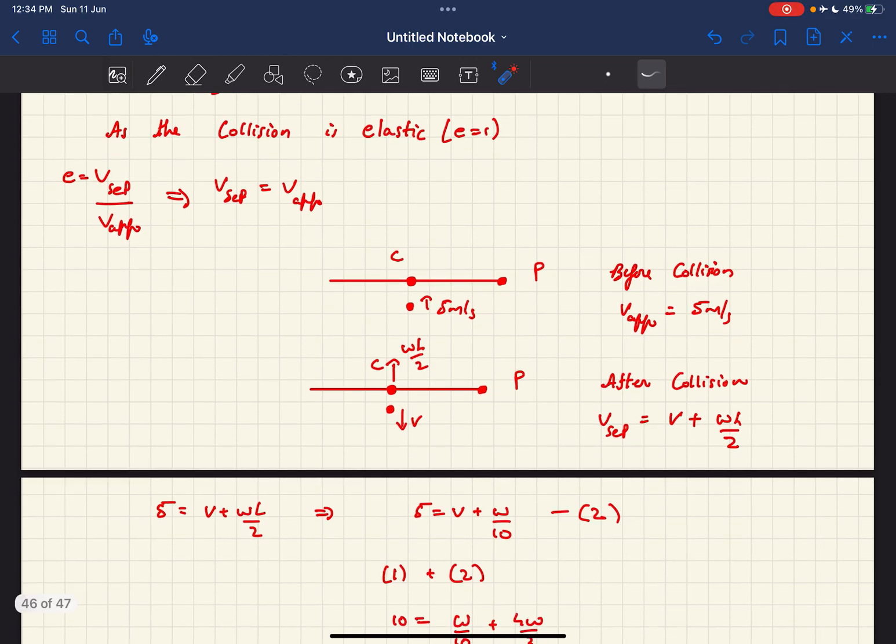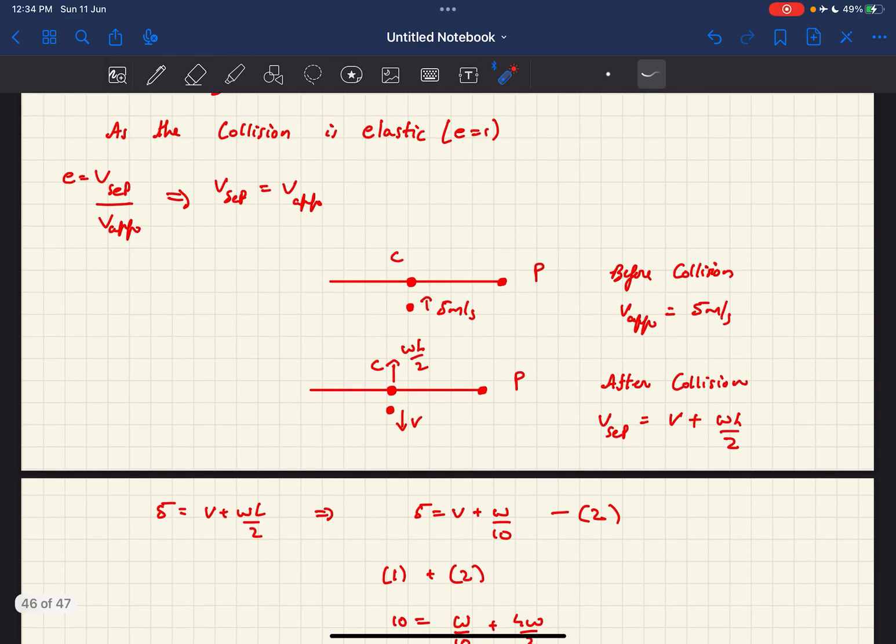Now just before collision, c is the point of collision by the way, and just before collision we can say the smaller mass approaches the point c with a velocity of 5 meter per second, so we could say the approach velocity is 5 meter per second.